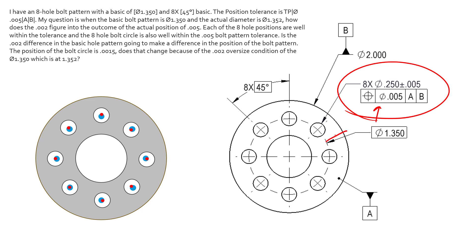Nothing about this feature control frame is reporting either the size or the location of the center of this bolt pattern circle. You can extrapolate, if you're curious, what the bolt pattern circle ended up being, but it won't be a perfect circle — you'll have to do some sort of best-fit circle to all of these points since they have their own positional deviation. That best-fit circle really doesn't apply to anything functionally anyway. The only rejectable criteria in this feature control frame is the position of each one of these eight holes individually. Hopefully that helps with position on bolt circle diameters.